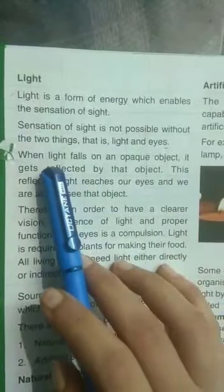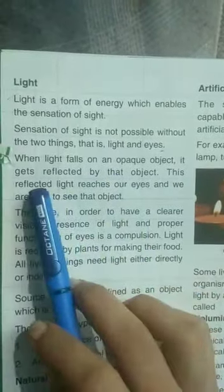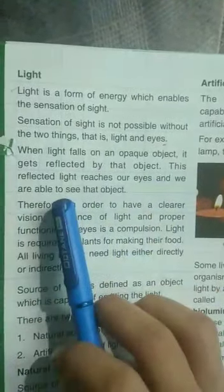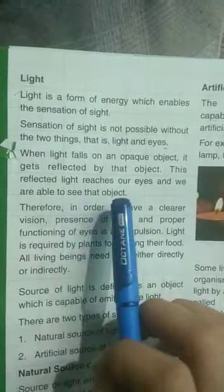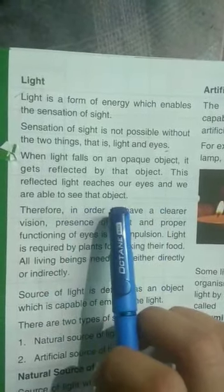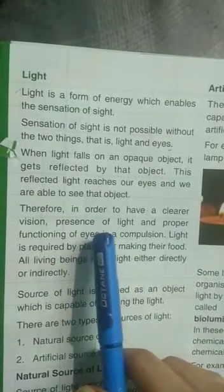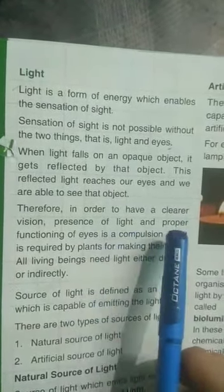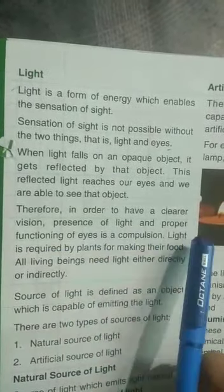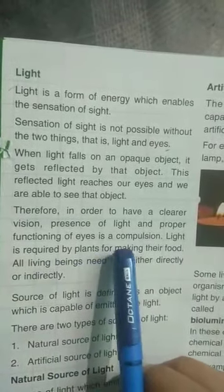When light falls on an opaque object, it gets reflected by that object. This reflected light reaches our eyes and we are able to see that object. Therefore, in order to have a clear vision, the presence of light and proper functioning of eyes is a compulsion.